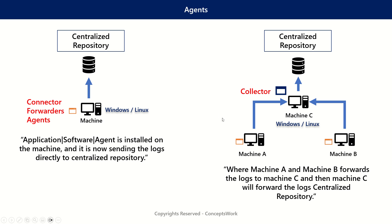In this kind of implementation, the agent installed on machine C is typically termed as a collector. There can also be a directional flow where the collector on machine C queries data from machine A and machine B. The other way around is machine A and machine B forward data to machine C, which then forwards it to the centralized repository. In either scenario, this agent is called a collector.